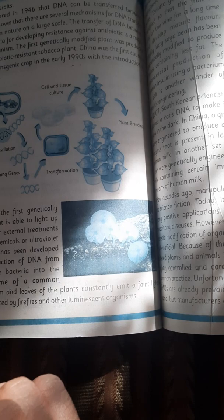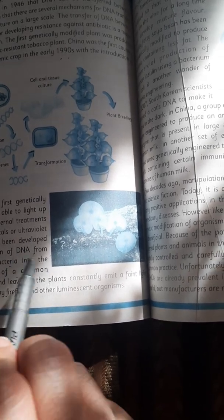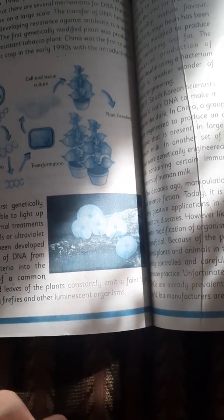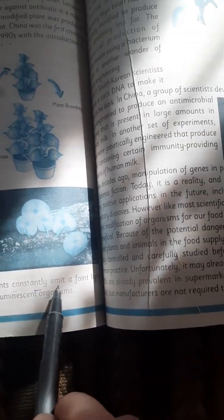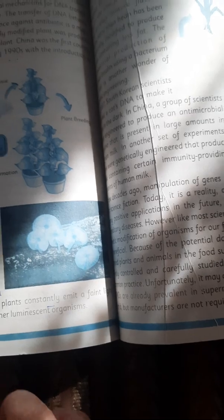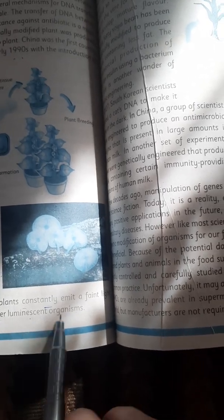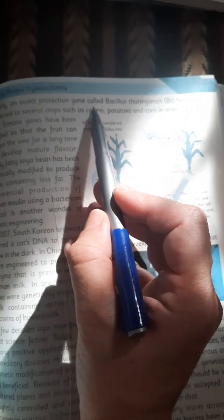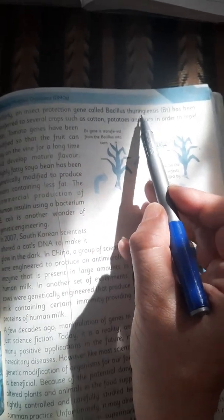They have taken DNA from one plant and put it into a common house plant. The stem and leaves of the plants constantly emit a faint light similar to that produced by fireflies and other luminescent organisms. Similarly, an insect protection gene called Bacillus thuringiensis, Bt, has been transferred to several crops.